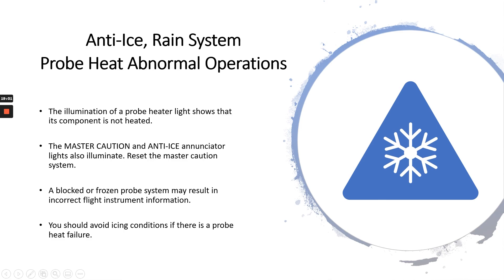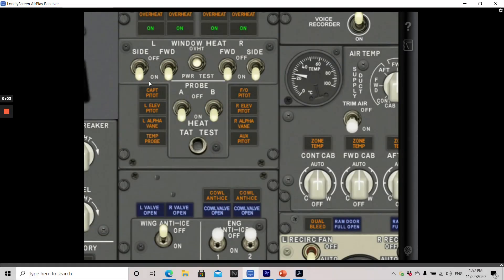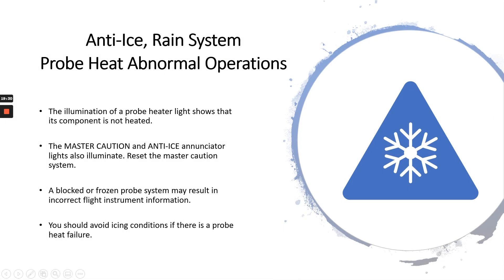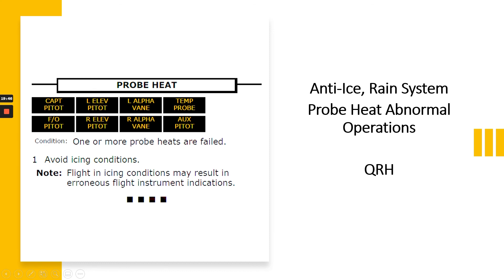For probe heat abnormal operations: illumination of a probe heater light shows that its component is not heated. The master caution and anti-ice annunciator lights also illuminate. A blocked or frozen probe system may result in incorrect flight instrument information — avoid icing conditions if there is a probe heat failure. The QRH for probe heat: condition — one or more probe heats are failed. Avoid icing conditions. Note: flight in icing conditions may result in erroneous flight instrument indications.